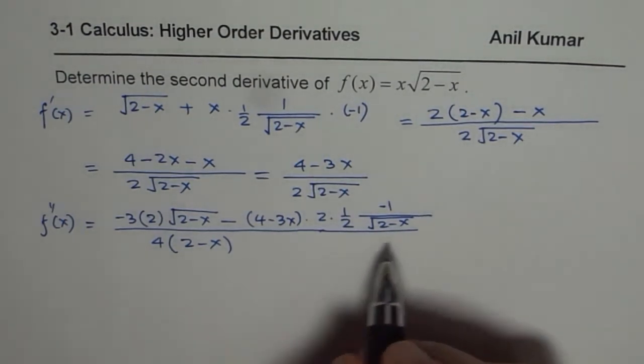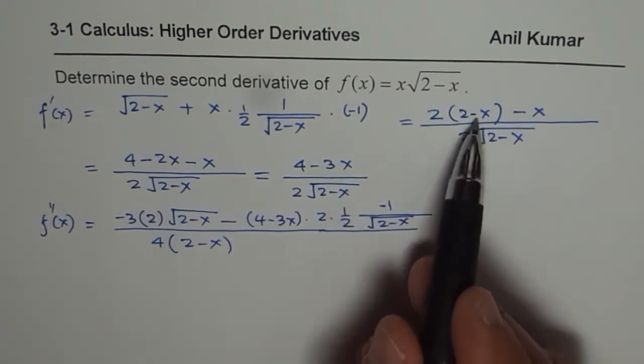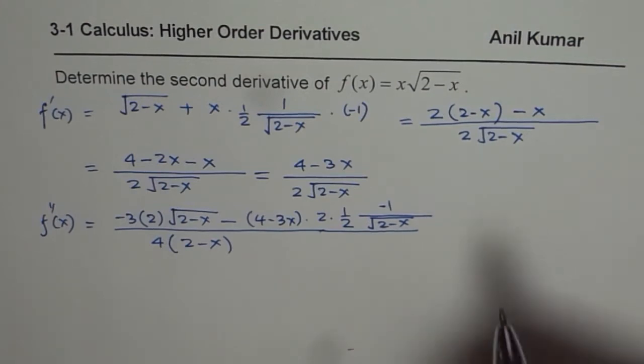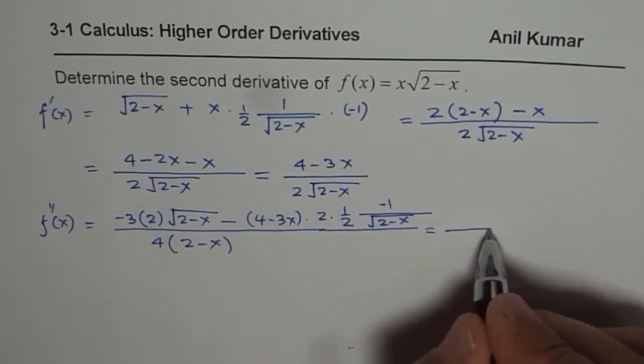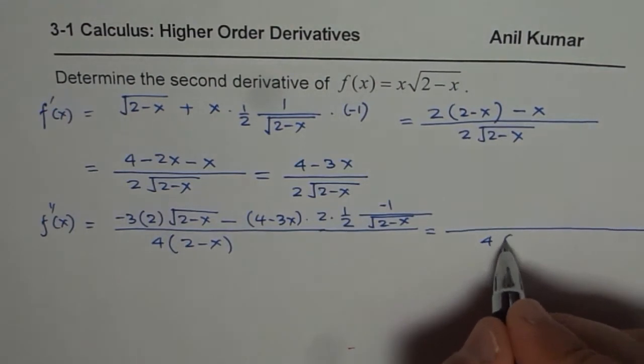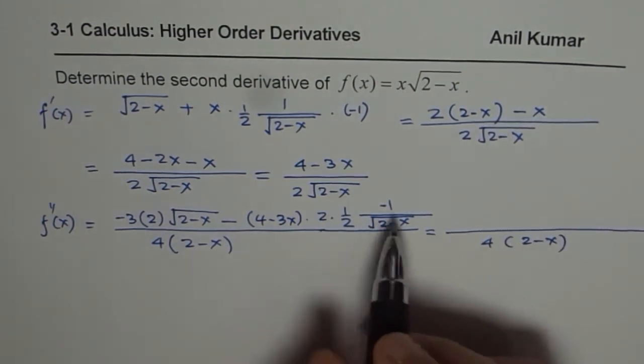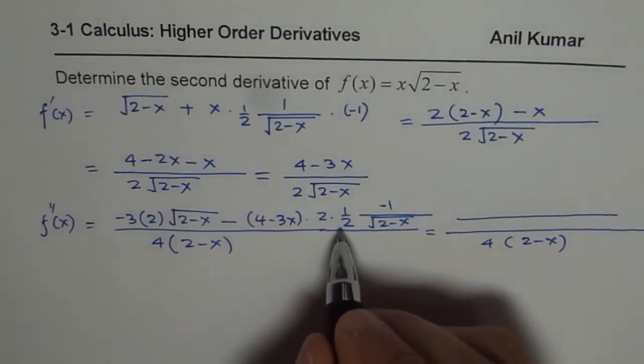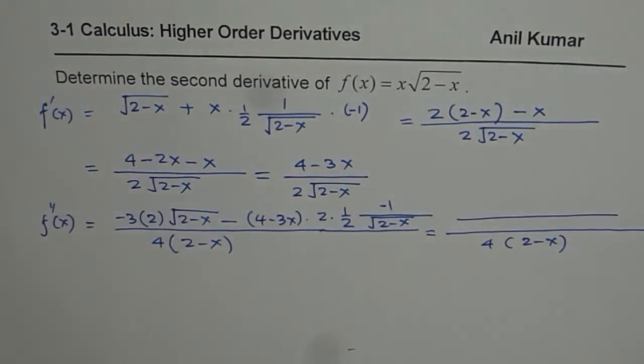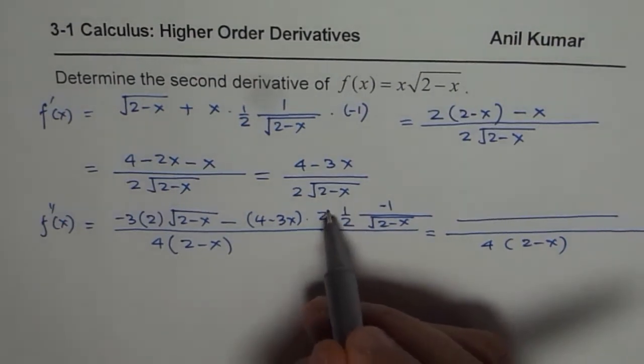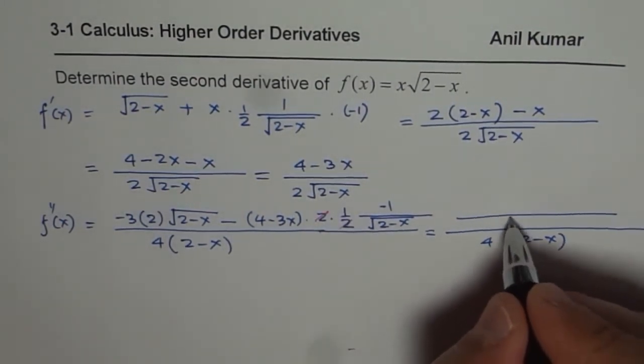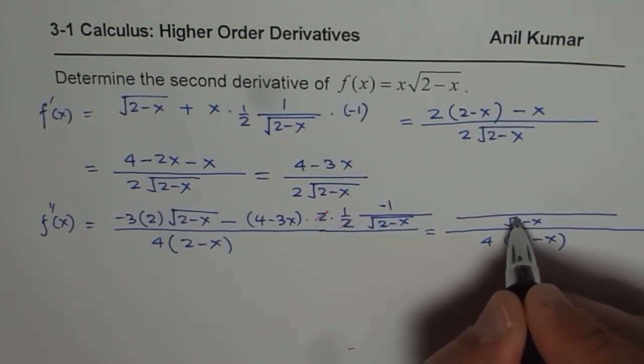Now let us simplify this a bit more. So what we have here is in the denominator, we got 4 times 2 minus x. Now we can take this common denominator which is 2 and 2 cancels. Let us cancel 2 and 2. It becomes slightly more simpler. And square root of 2 minus x is common denominator now.